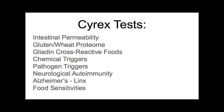To summarize Cyrex's available testing: Array 2 for intestinal permeability, Array 3X for the gluten and wheat proteome, Array 4 for gliadin cross-reactive foods — often those three can be combined. There are also chemical trigger panels, pathogen trigger panels, neurological autoimmunity panels, joint autoimmunity panels, blood-brain barrier permeability testing, and the new Alzheimer's LINX test — which just came out last year and tests predictive autoantibodies for Alzheimer's. Cyrex is the world's leader in food sensitivity testing as well. Dr. Vojdani invented food sensitivity testing, so they're the go-to there.